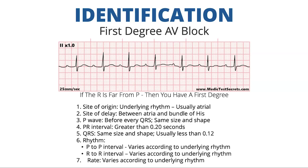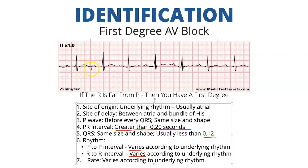There will be a P wave before every QRS, usually the same size and shape. The PR interval — what makes it a first degree AV block — is greater than 0.20 seconds. The QRS is usually the same size and shape, usually narrow at less than 0.12 seconds. The P to P interval and R to R interval can vary depending on the underlying rhythm. The rate also can vary. The key identifier is this prolonged PR interval greater than 0.20 seconds.